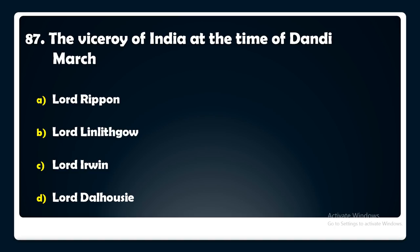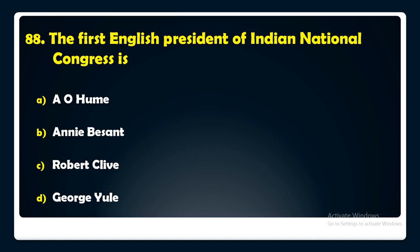The first English President of the Indian National Congress was — A.O. Hume, Annie Besant, Robert Clive, or George Yule?